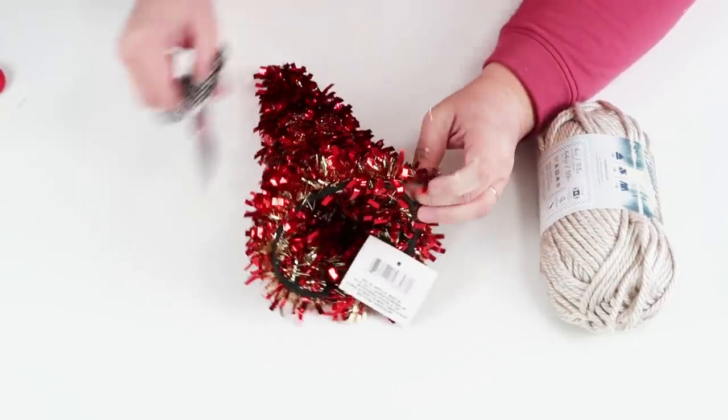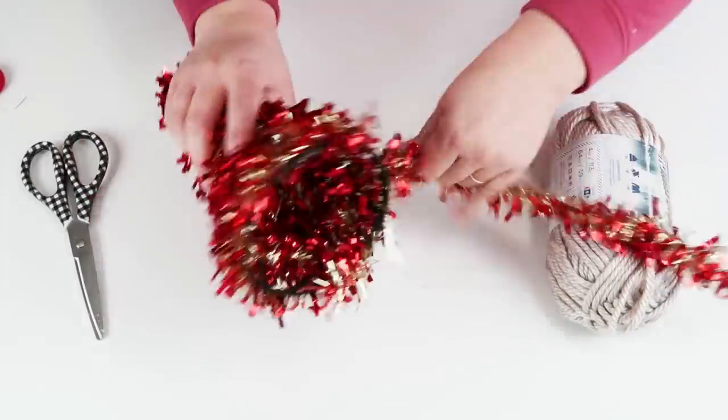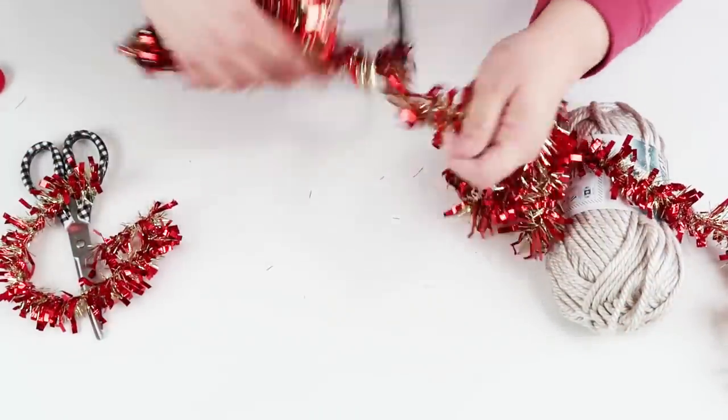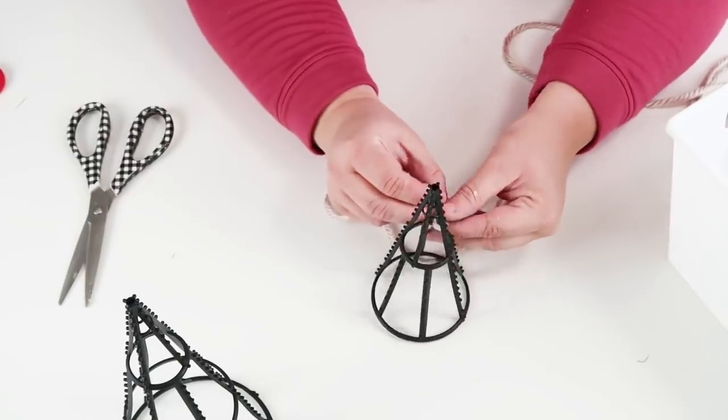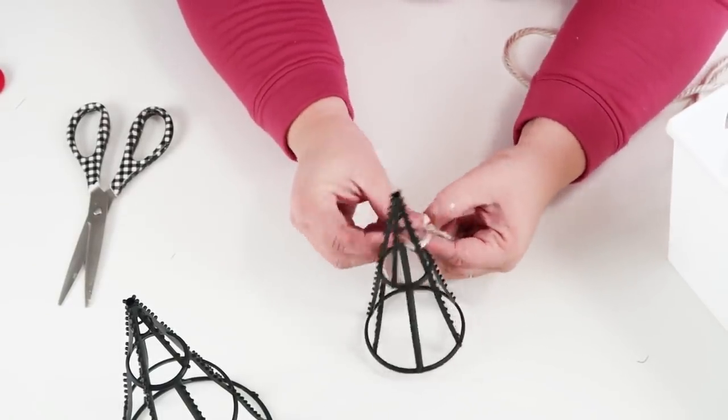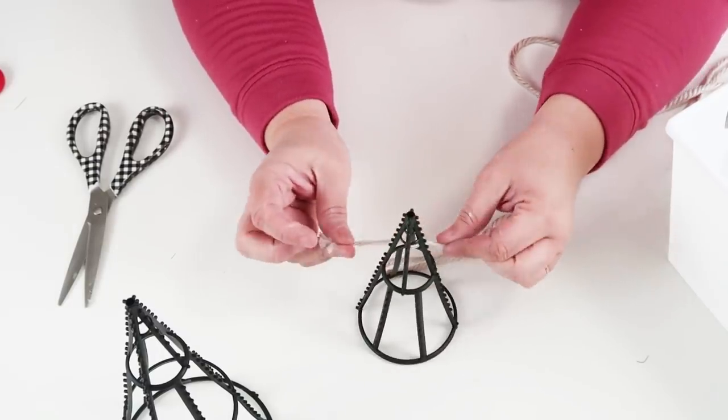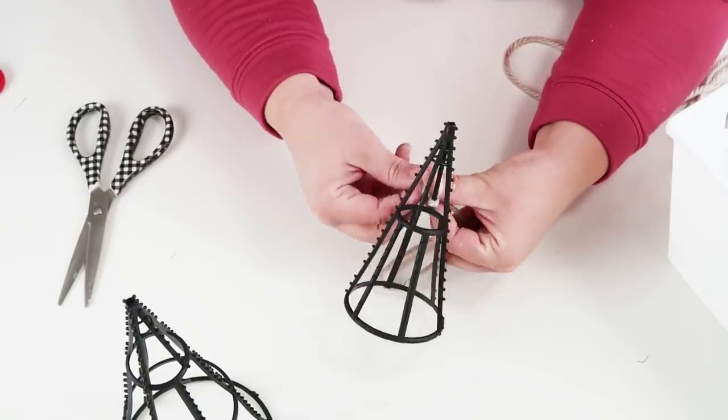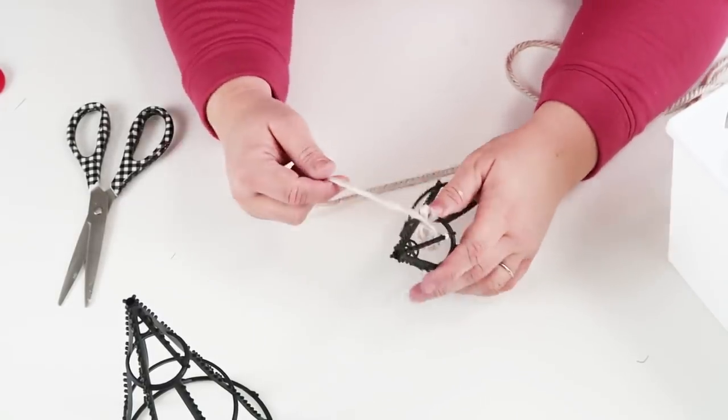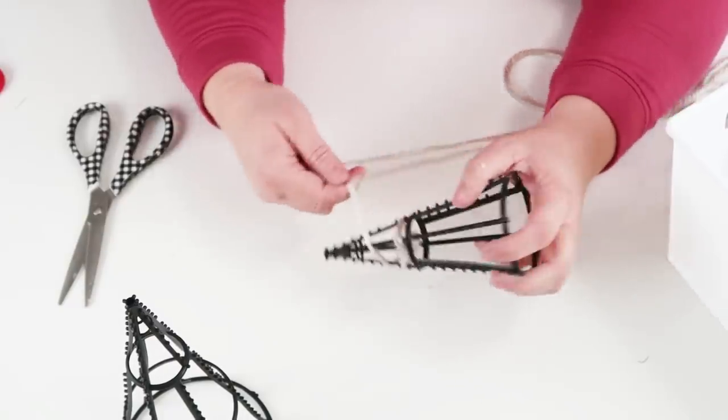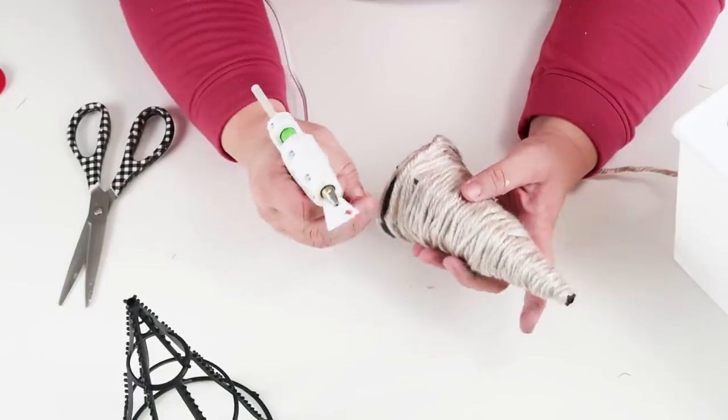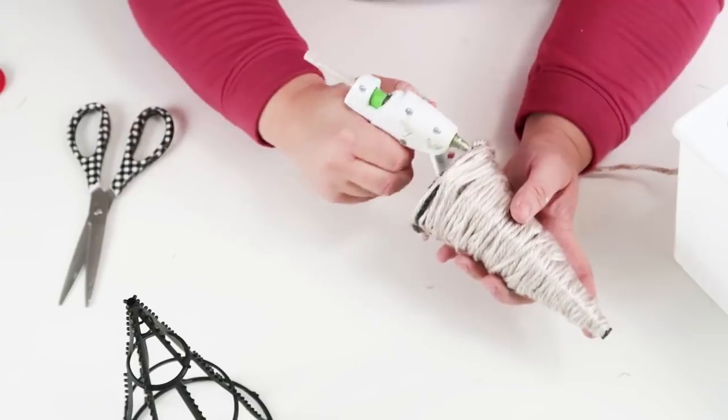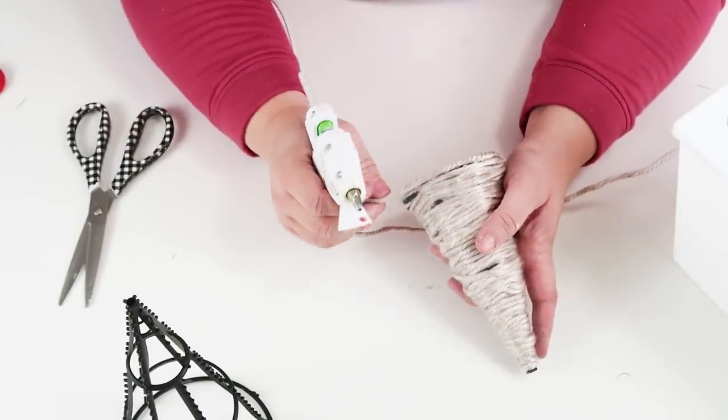For this DIY we're going to be using one of these cone trees that have the tinsel all over it and some yarn of your liking, and we are going to just unravel it and take it all off. Now I'm going to take this yarn, tie a double knot on it first, and then twist that knot underneath so you don't even see it—it's hidden inside. These trees are so easy to make and you just pick the color of yarn that you like the most. You're just going to twist it and wrap it all the way around it.